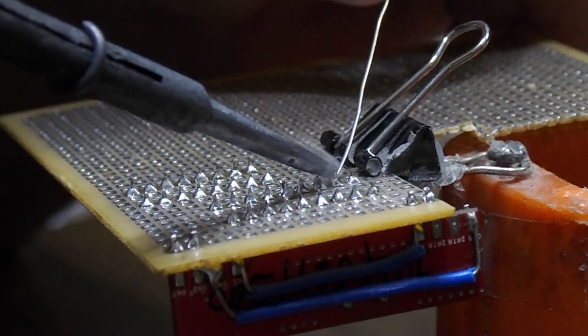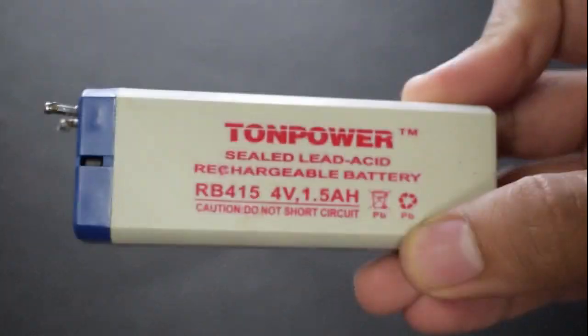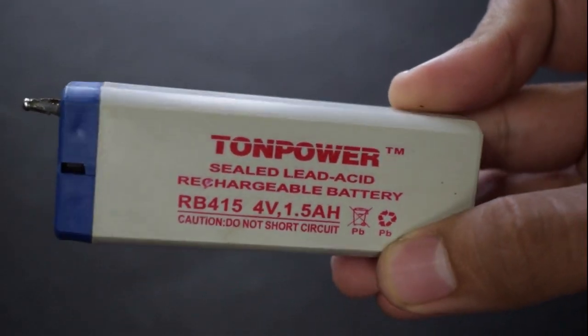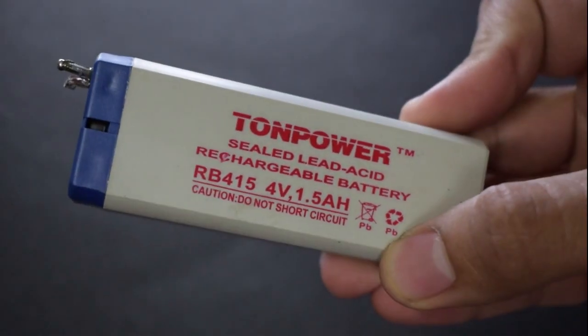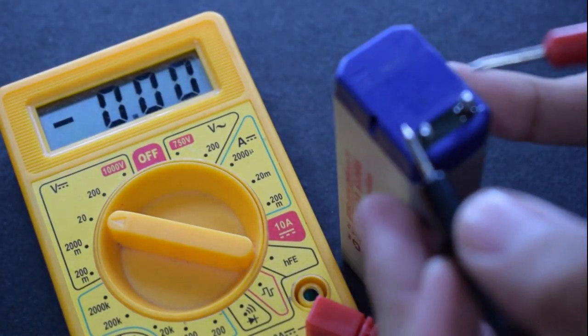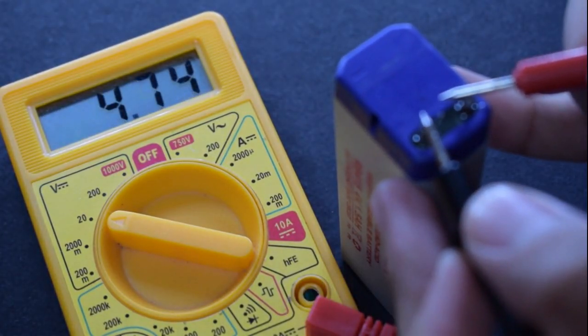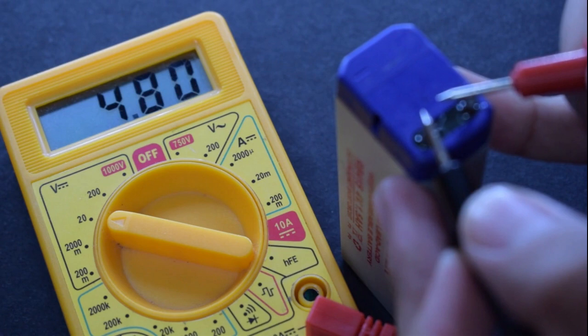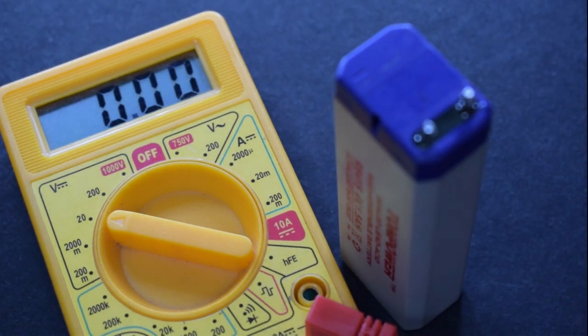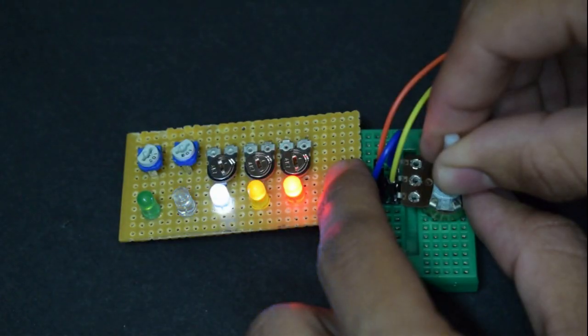If you work with electronics, then you will be familiar with these kinds of lead acid batteries. When working with them, it is necessary to know the battery voltage, and that can be known by a multimeter. Every time using the multimeter sucks, so in this small video I will be showing you how to make the simplest battery voltage level indicator with few components.